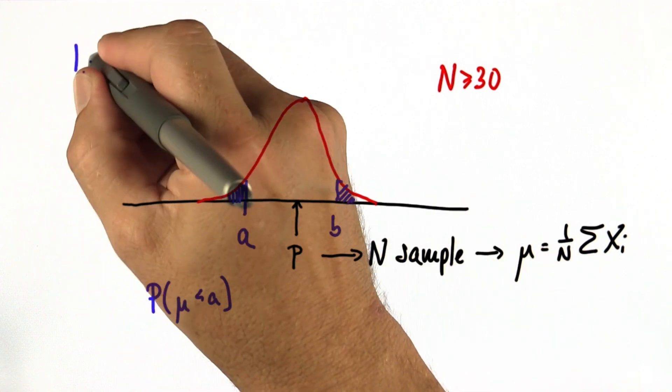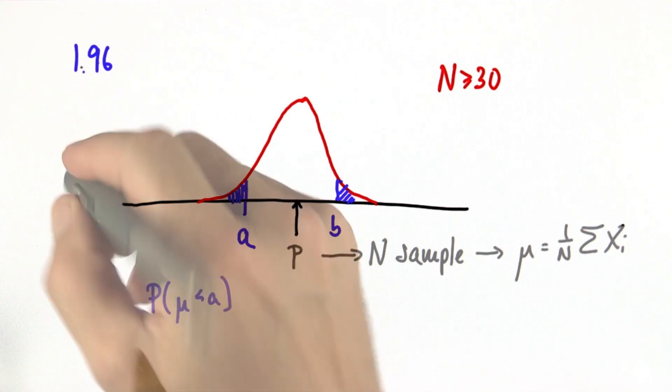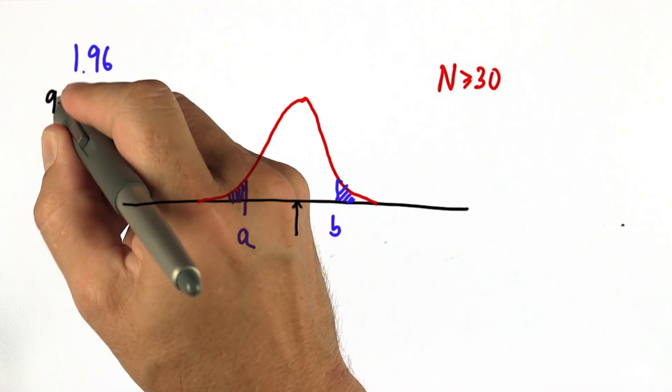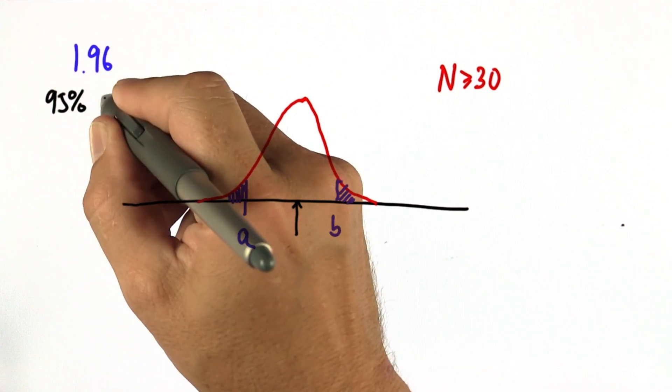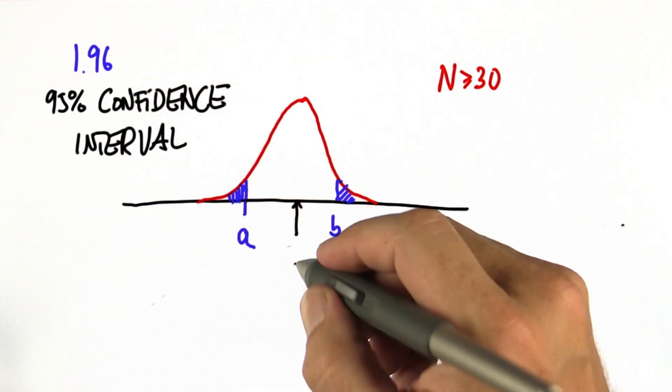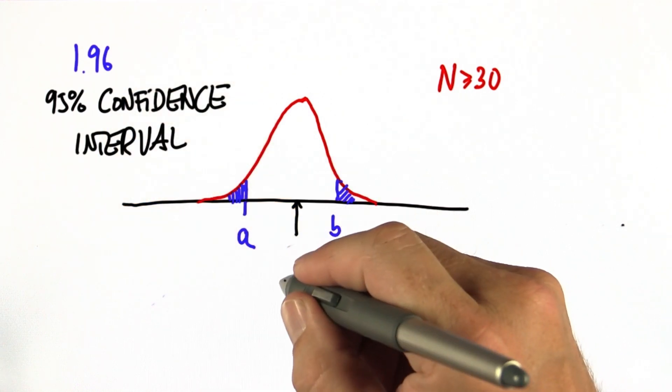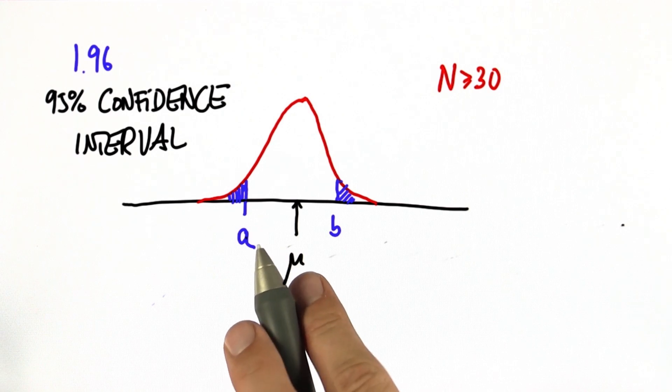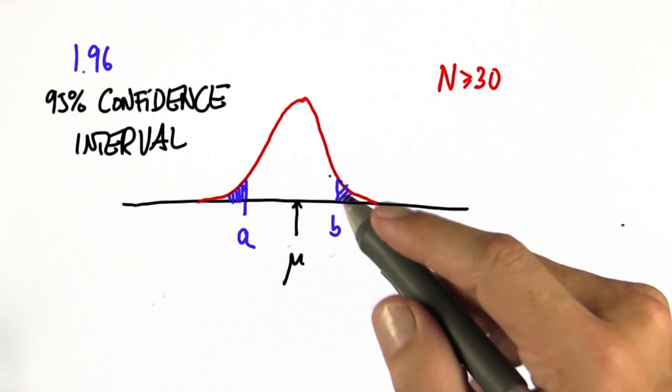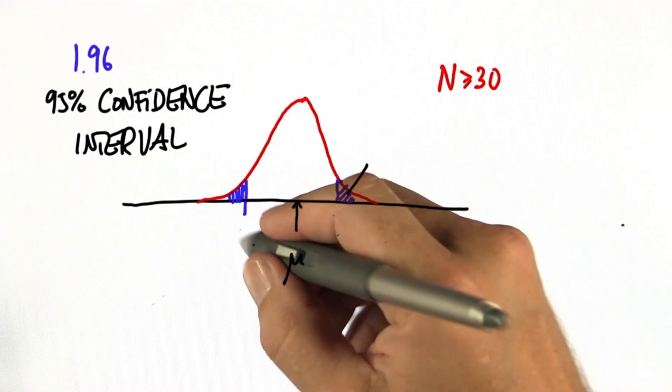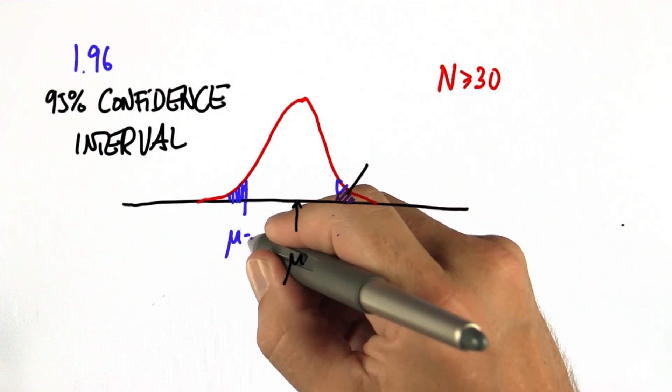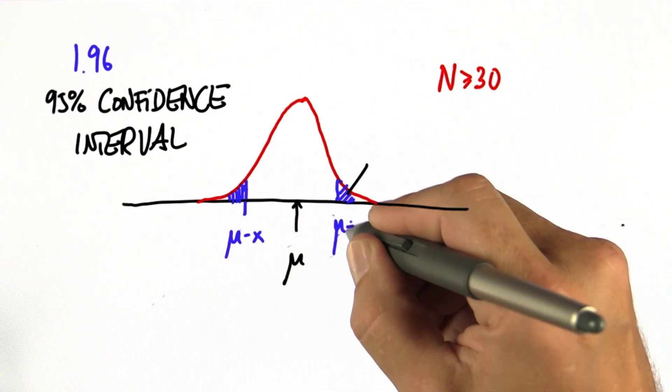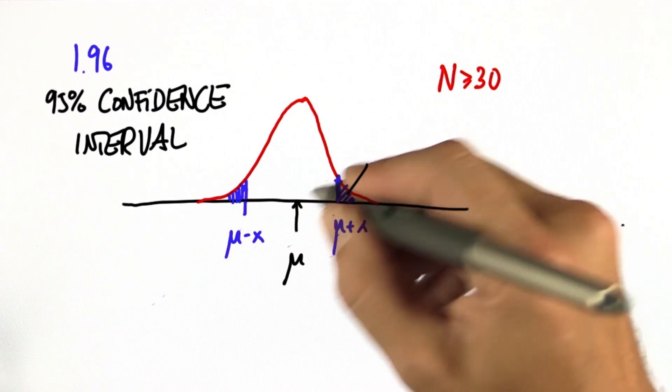Now where does the 1.96 come from? And here's the trick. 1.96 marks the 95% confidence interval. So we plug in the observed μ instead of the p, which we don't know. Under the central limit theorem, we get the same Gaussian. And then we compute the x of which μ minus x or μ plus x give us these decision boundaries,